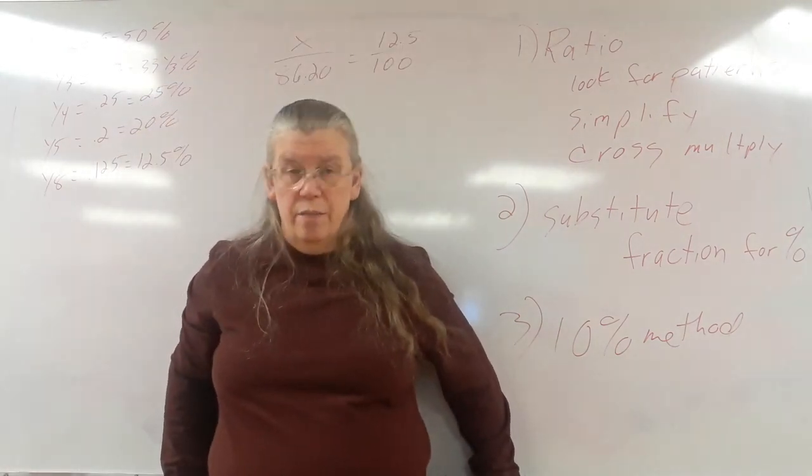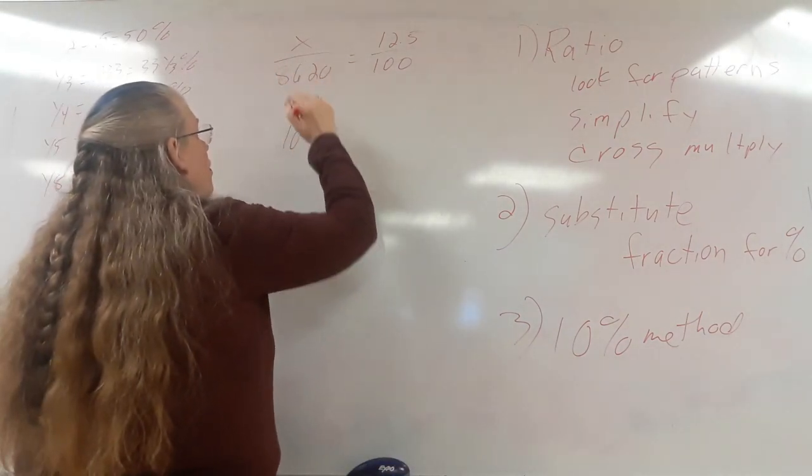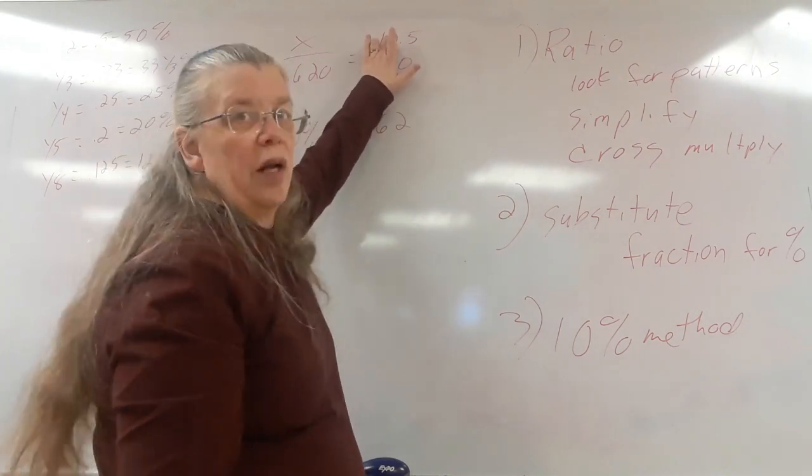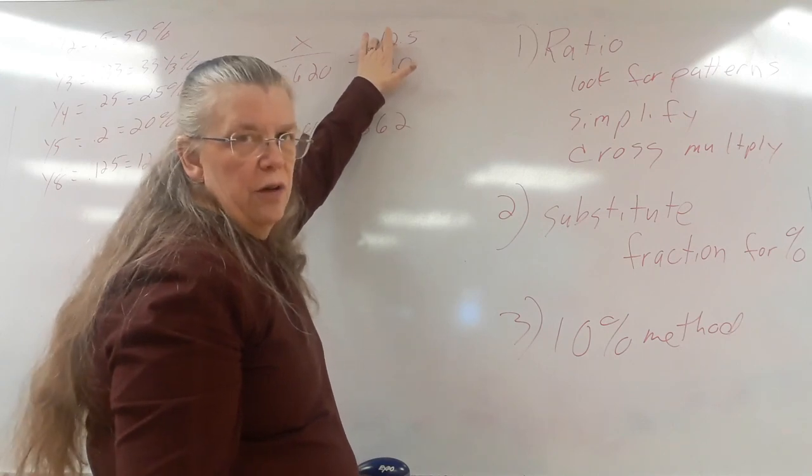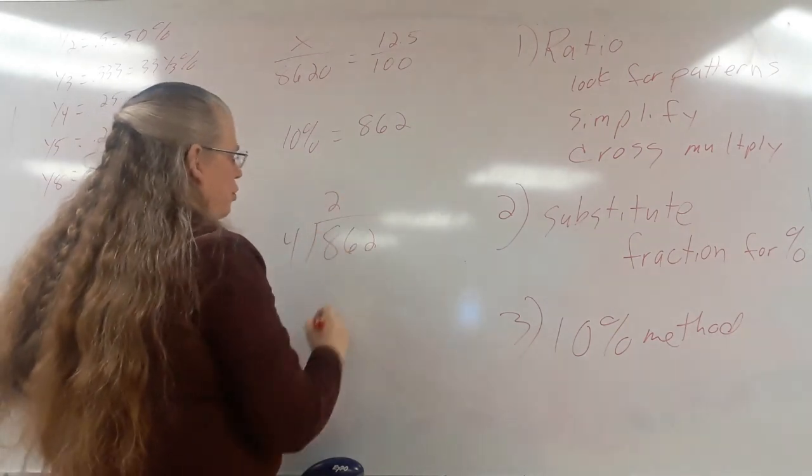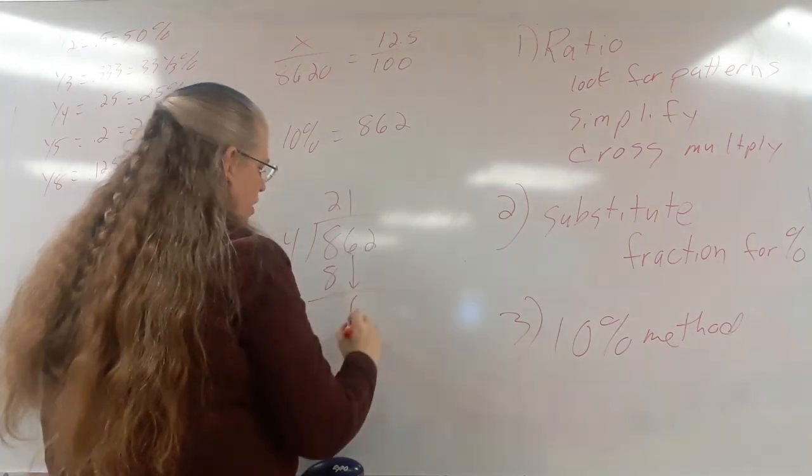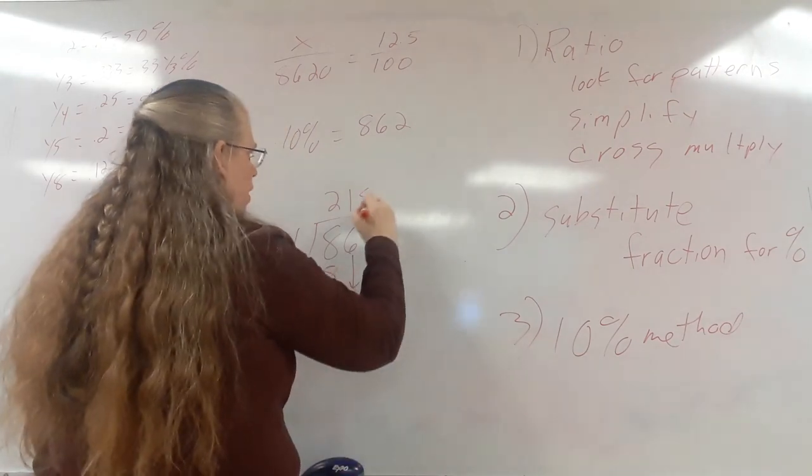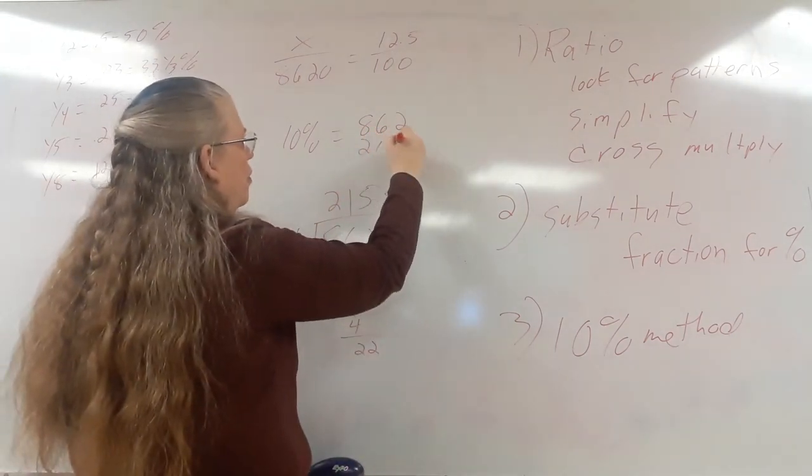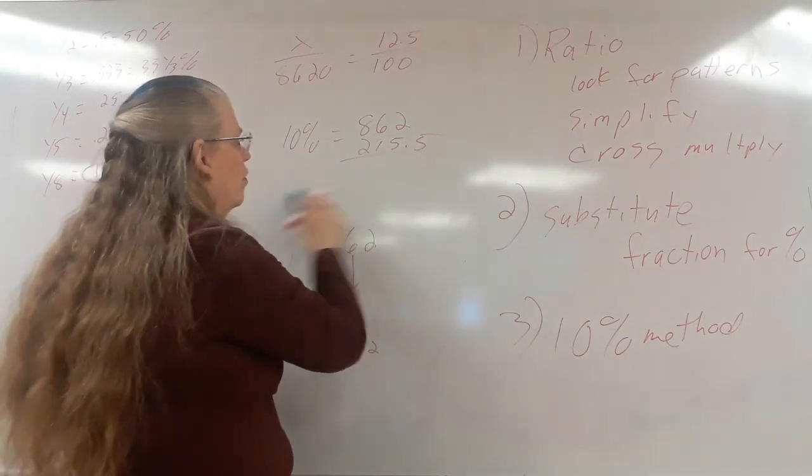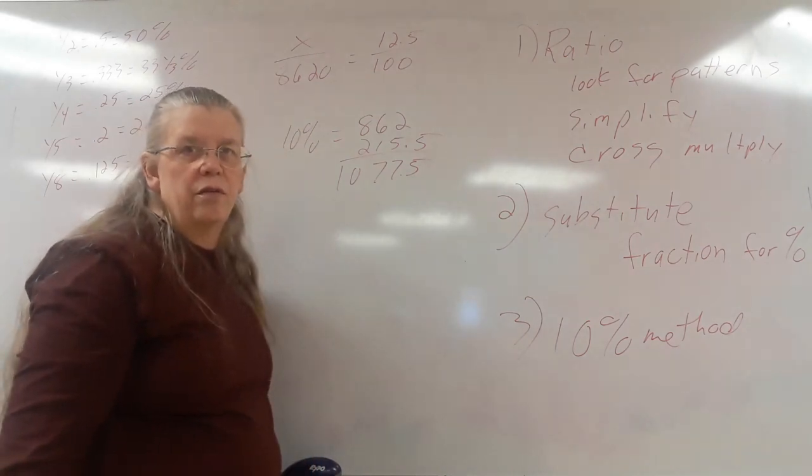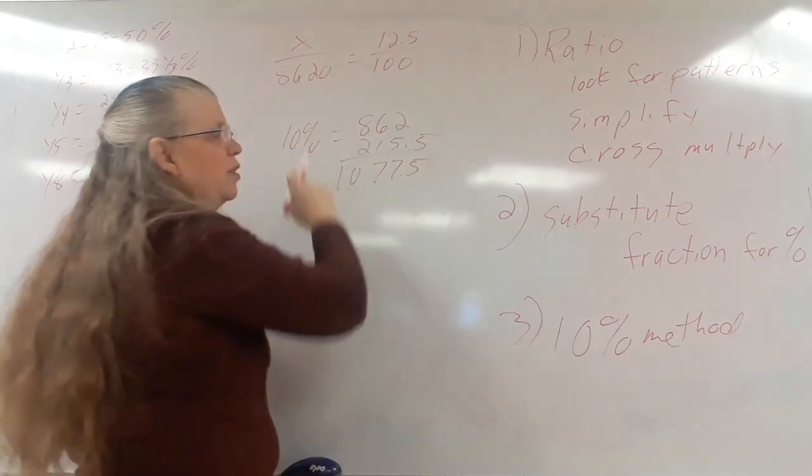Let's look at how we can do this with the 10% method. 10% is $862. Now we need 2.5%. 2.5% is 1 fourth of 10%. $862 divided by 4 is $215.50. So we're going to add this $215.50 here and we get the same answer, $1,077.50. But you have to recognize that 2.5 is 1 fourth of 10.